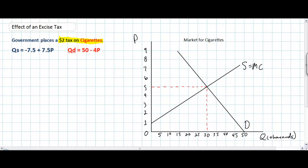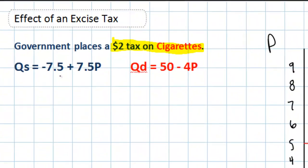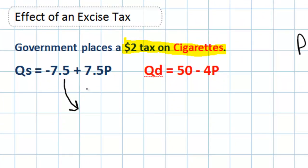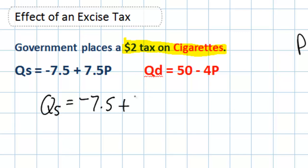Knowing that, it's quite simple to come up with the new supply equation. The $2 tax will be subtracted from the price that consumers pay, so the new supply equation will be QS = -7.5 + 7.5(P - 2). The minus 2 represents the $2 tax, since the price consumers pay is $2 greater than the price that producers will get to keep.